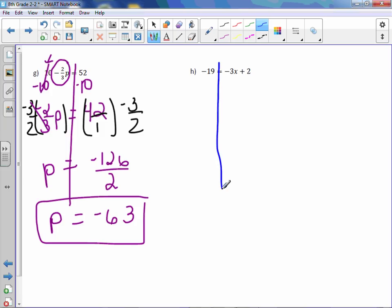Letter H. We have a plus 2 added on to our variable term. So we will subtract 2 from both sides. Negative 21 equals negative 3X. Divide both sides by negative 3. We get positive 7 equals X.